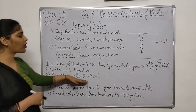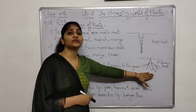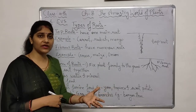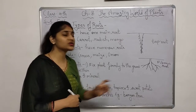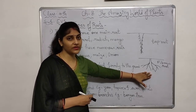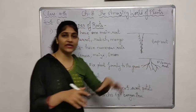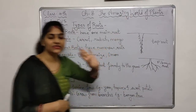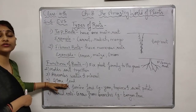The third function is to absorb water and minerals. Just like we eat food to get energy, plants also need to eat. Plants make their food through a process called photosynthesis. For photosynthesis, they need water and minerals, which the roots absorb from the soil and send up to the plant.